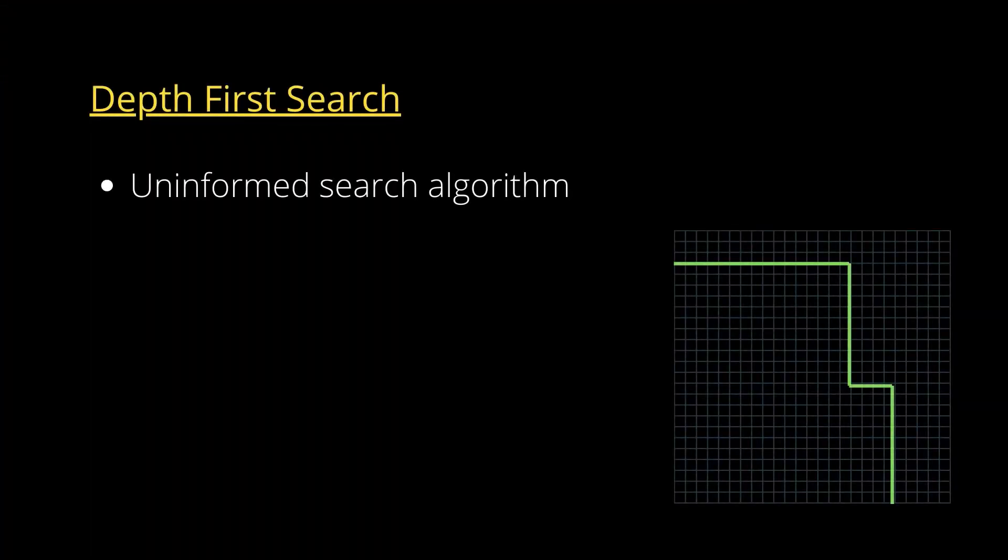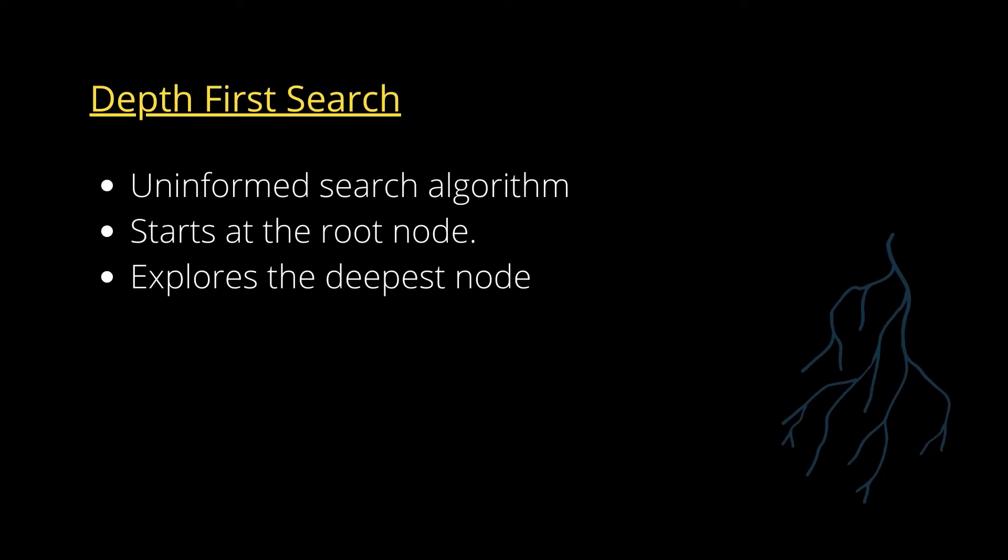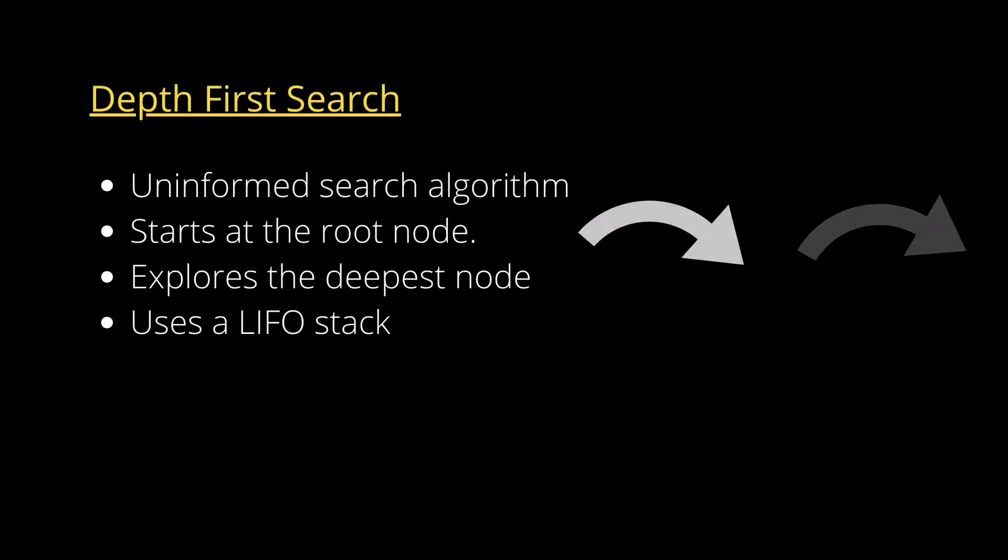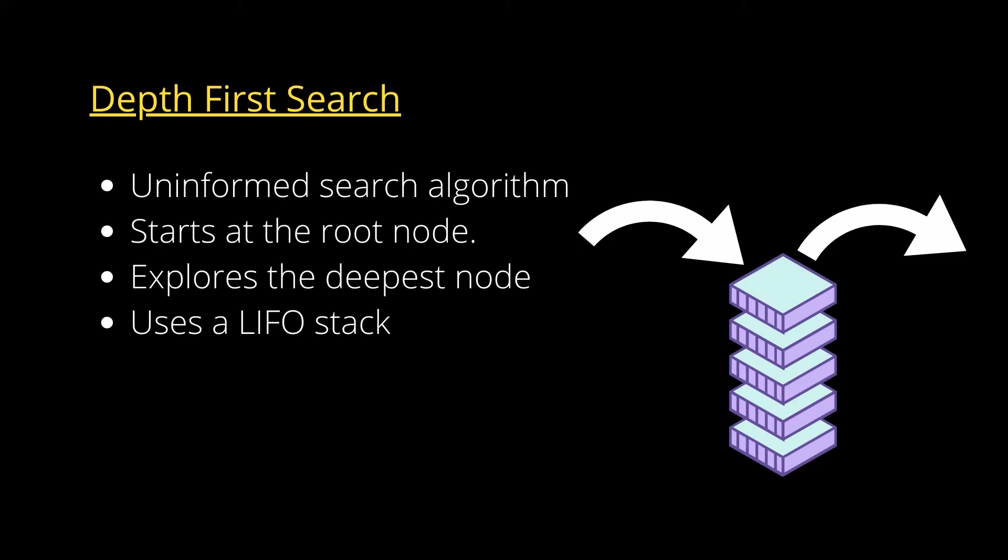Depth first search is an uninformed search algorithm used for traversing or searching a tree or graph data structure. The algorithm starts at the root node and explores the deepest node as far as possible before backtracking and continuing to search for the goal state. DFS uses a LIFO stack, that is the most recently generated node is chosen for expansion.